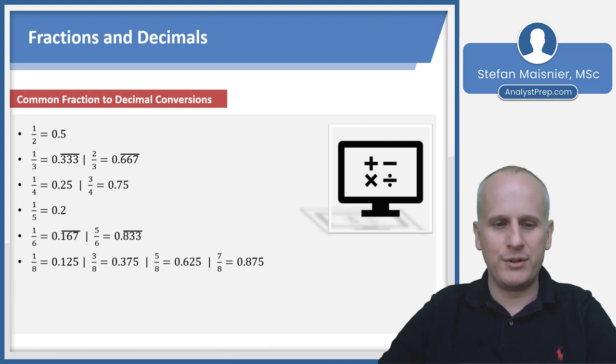For eighths: one eighth is 0.125, three eighths is 0.375, five eighths is 0.625, and seven eighths is 0.875. That's by adding or subtracting half of 0.25 respectively. One ninth is one third divided by three, so 0.1 repeating. Two ninths would be 0.2 repeating.